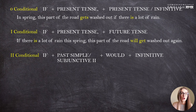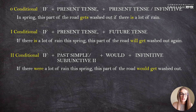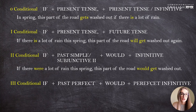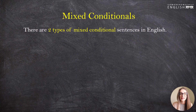Instead of 'would' here you can use 'could' or 'might.' For example: 'If there were a lot of rain this spring, this part of the road would get washed out.' The second conditional speaks about an unreal situation — something that is impossible now. The third conditional formula is: if plus the past perfect tense or past perfect progressive plus 'would' plus the perfect infinitive. For example: 'If there had been a lot of rain last spring, this part of the road would have got washed out.'